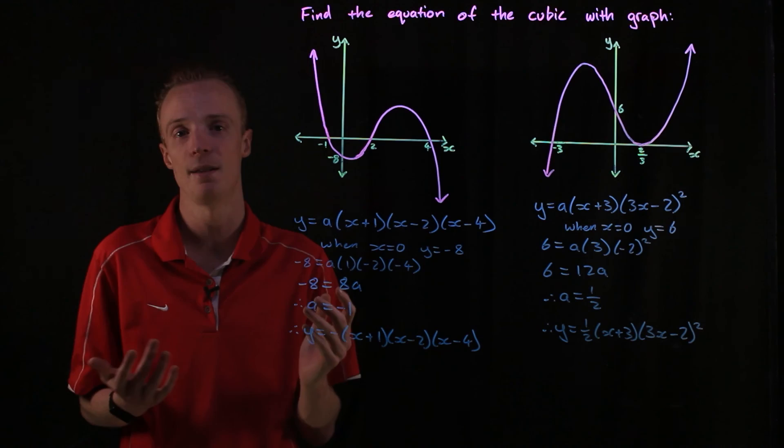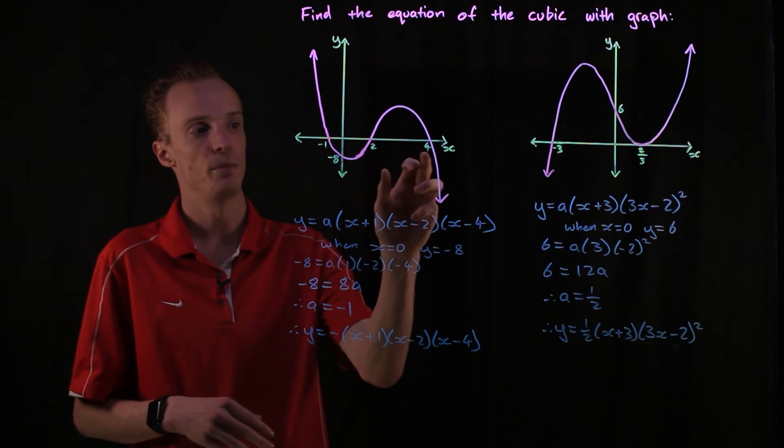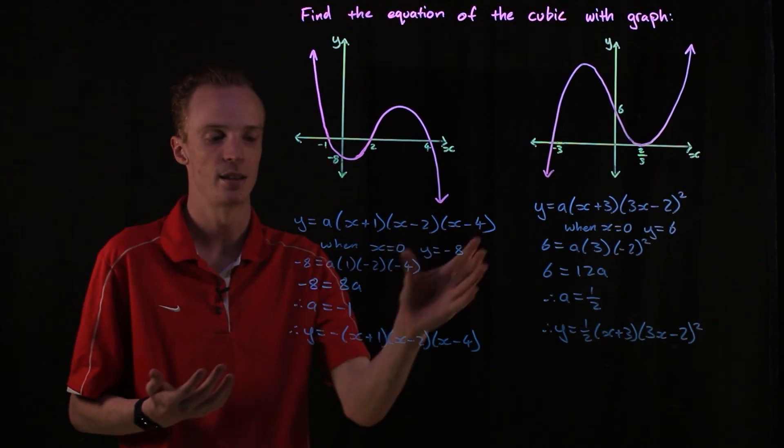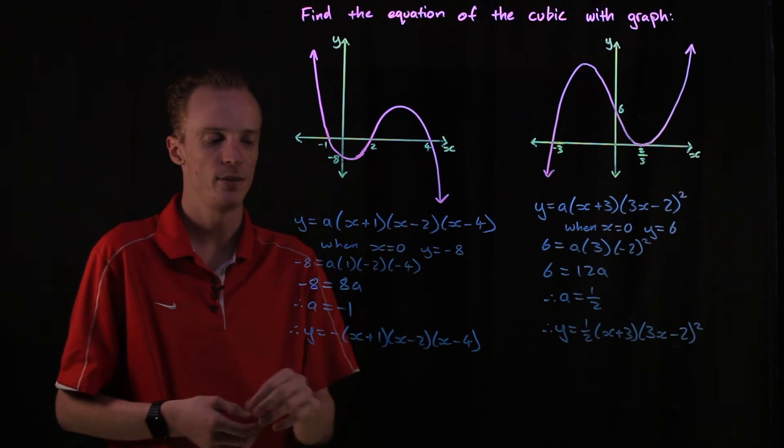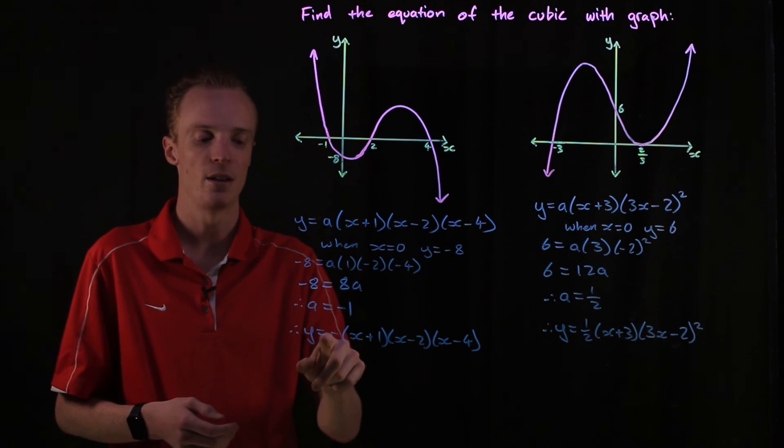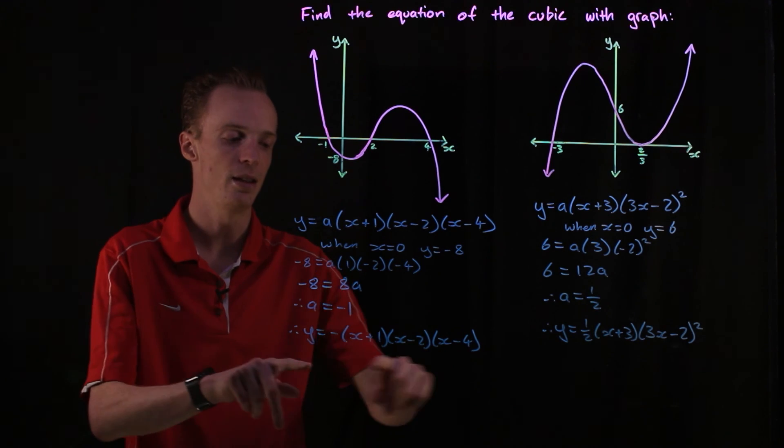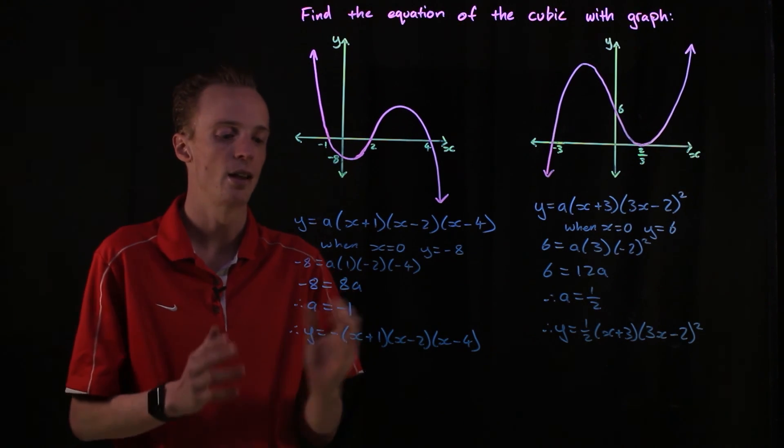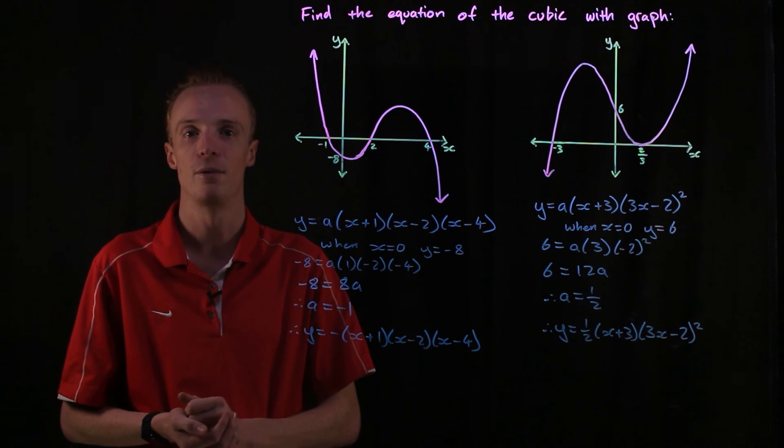Once you've done that, you solve for the a value and you substitute the a value back into your polynomial here or your function, and you've found the equation for your cubic function.